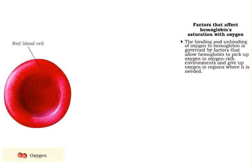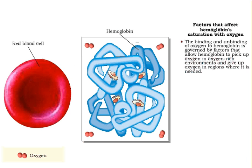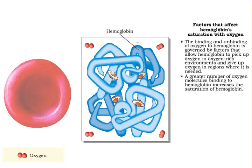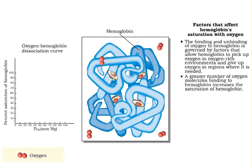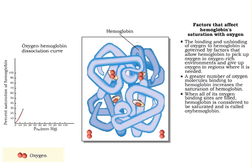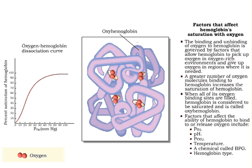The loading and unloading of oxygen to hemoglobin is governed by factors that allow hemoglobin to pick up oxygen in oxygen-rich environments and give up oxygen in regions where it is needed. The more oxygen molecules binding to hemoglobin, the higher its saturation. When all of its oxygen binding sites are filled, hemoglobin is considered to be saturated and is called oxyhemoglobin. Factors that affect the ability of hemoglobin to bind to or release oxygen include partial pressure of oxygen, pH, partial pressure of carbon dioxide, temperature, a chemical called bisphosphoglycerate or BPG, and hemoglobin type.